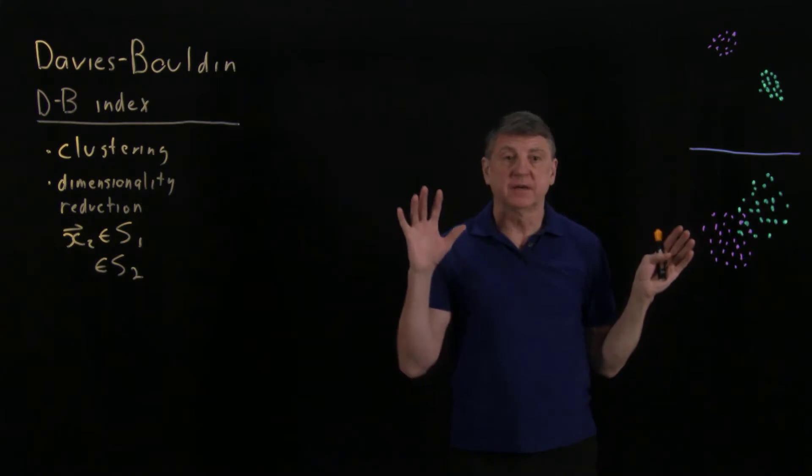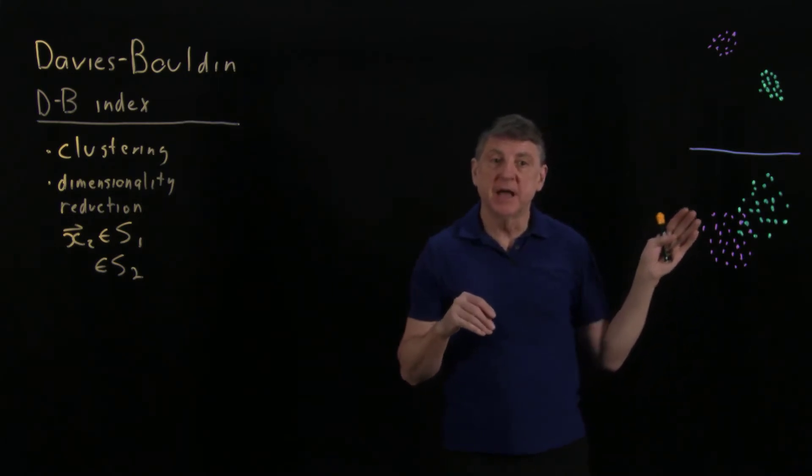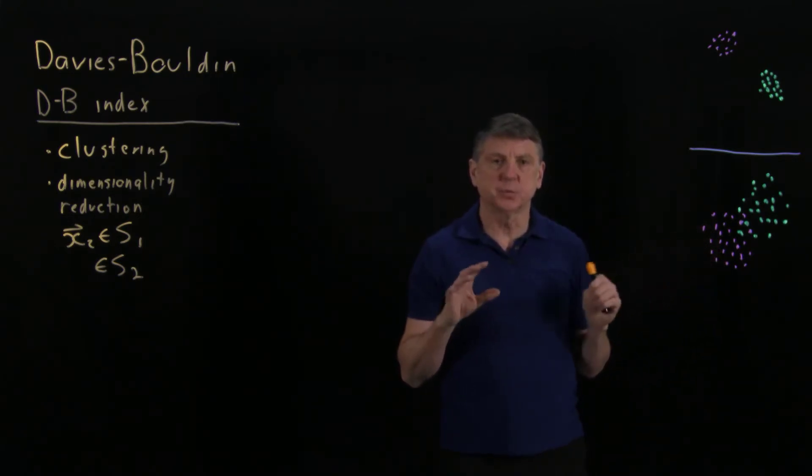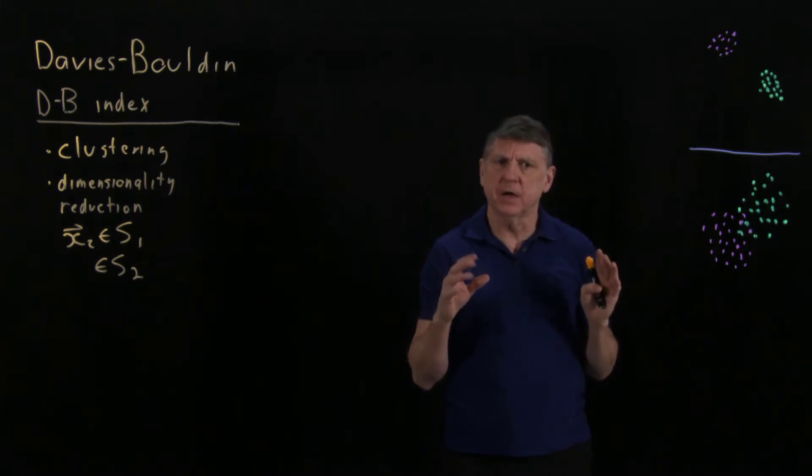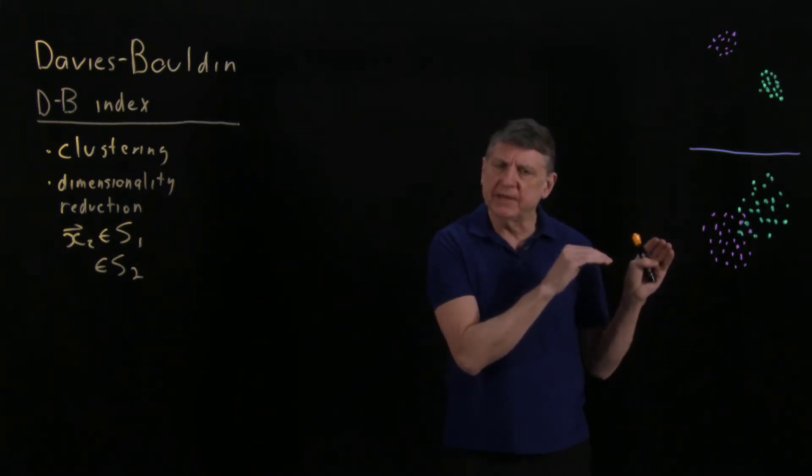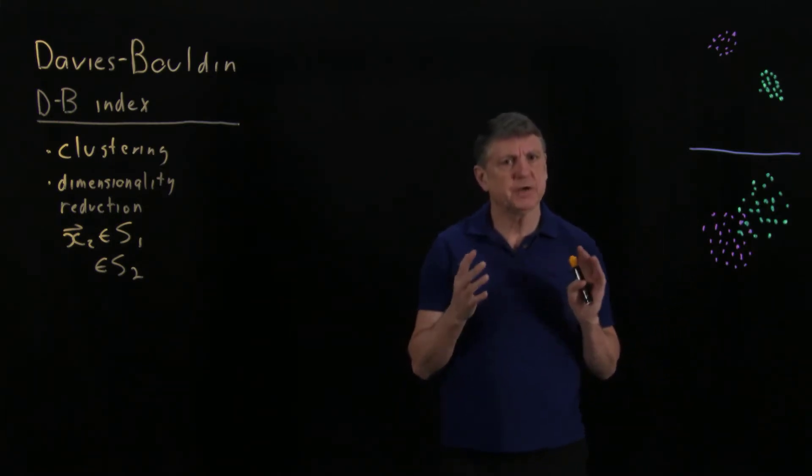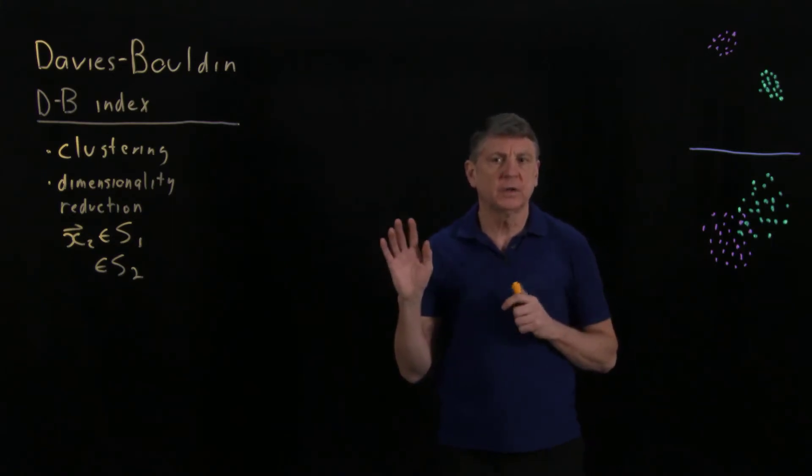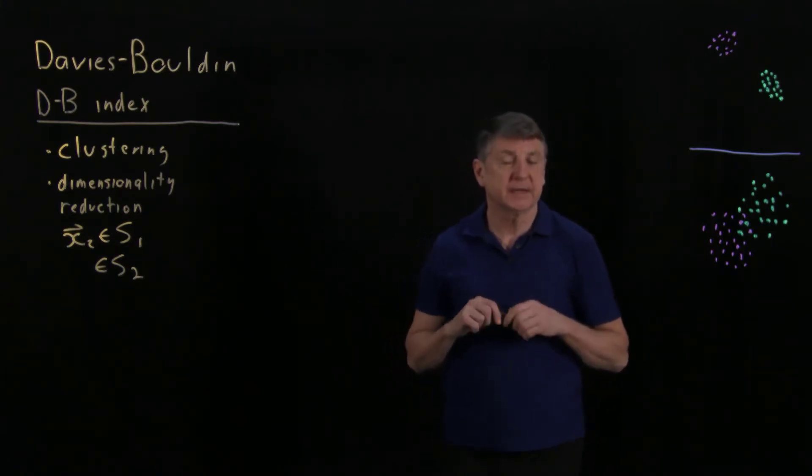Down here, suppose that we have a label that are projecting from a higher dimension. And here what we would say is, well, the clusters seem to be spread apart and they're close together. And those ideas of spread apart and close together are what the Davies-Bouldin index is trying to clarify.